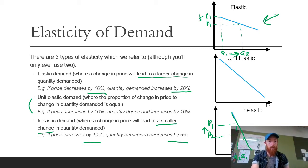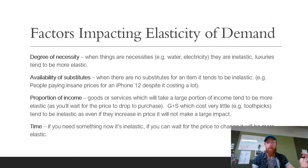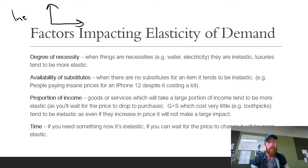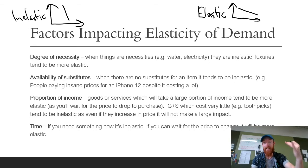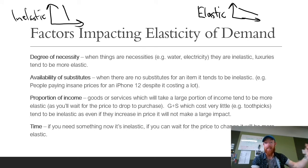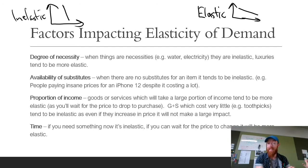Now let's look at the factors impacting elasticity of demand — these are all going to impact whether things are elastic or inelastic. We'll have inelastic on one side with a steep demand curve and elastic on the other with a flat one. These four factors — degree of necessity, availability of substitutes, proportion of income, and time — are the only four that VCAA can specifically ask you about as they are listed in the study design, and are the best ones to name-drop when asked about a factor that might impact the elasticity of demand for a specific product.